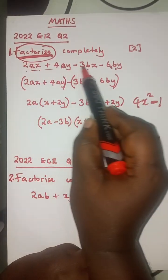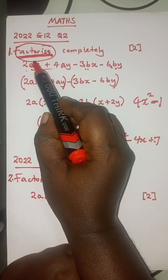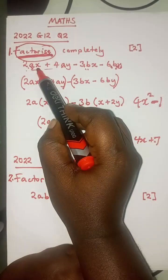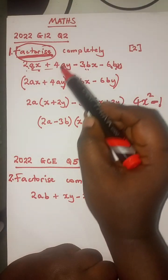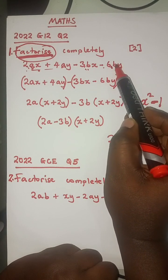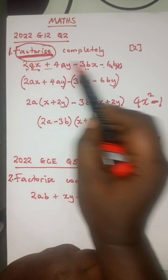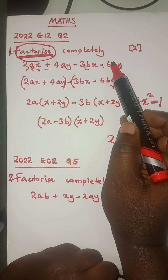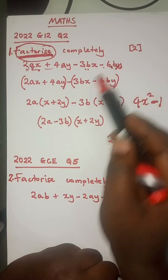Now, it's not always that the terms are arranged conveniently for you. Sometimes the pair for one term is on the other side, and in that case you have to bring it near. When you are doing that, please — no change of signs, because these are algebraic expressions, not equations. The sign only changes when you are crossing the equal sign.